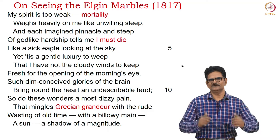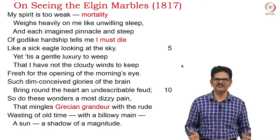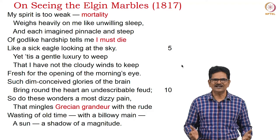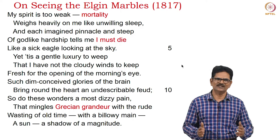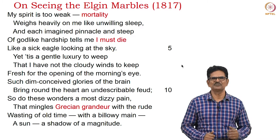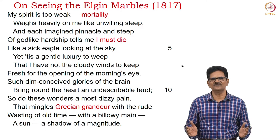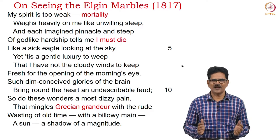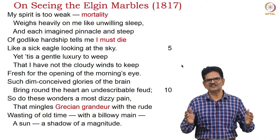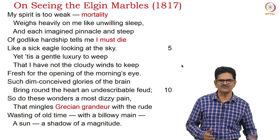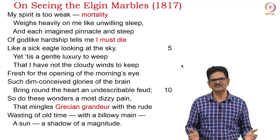Here is the sonnet 'On Seeing the Elgin Marbles,' written in 1817: 'My spirit is too weak — mortality weighs heavily on me, like unwilling sleep, and each imagined pinnacle and steep of godlike hardship tells me I must die, like a sick eagle looking at the sky. Yet 'tis a gentle luxury to weep that I have not the cloudy winds to keep fresh for the opening of the morning's eye. Such dim-conceived glories of the brain bring round the heart an undescribable feud; so do these wonders — a most dizzy pain, that mingles Grecian grandeur with the rude wasting of old time, with a billowy main, a sun, a shadow of a magnitude.'